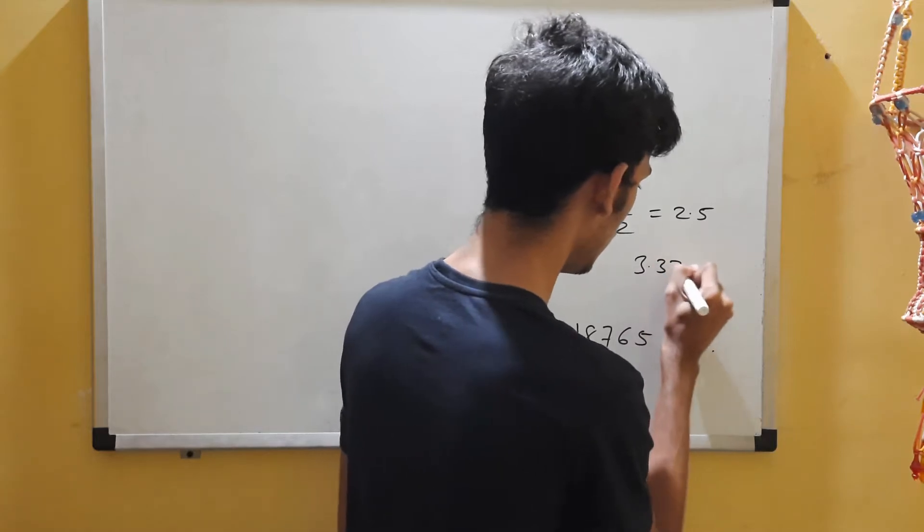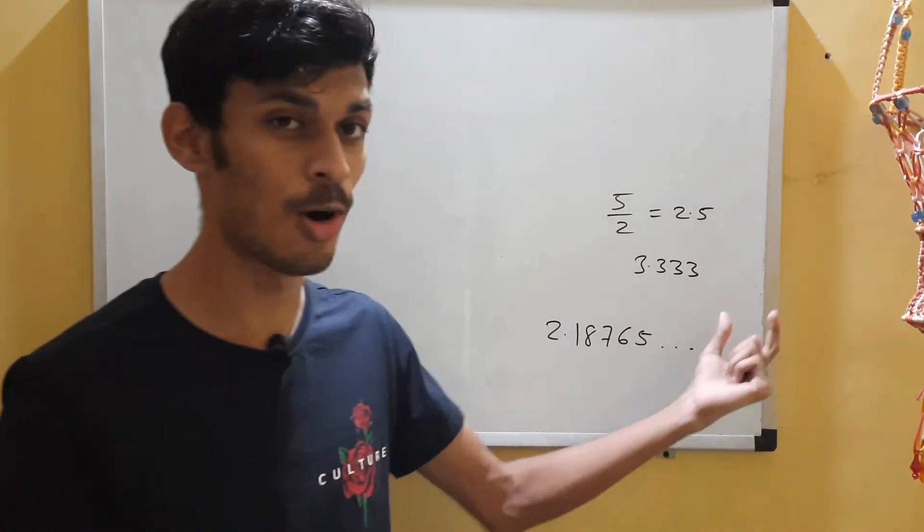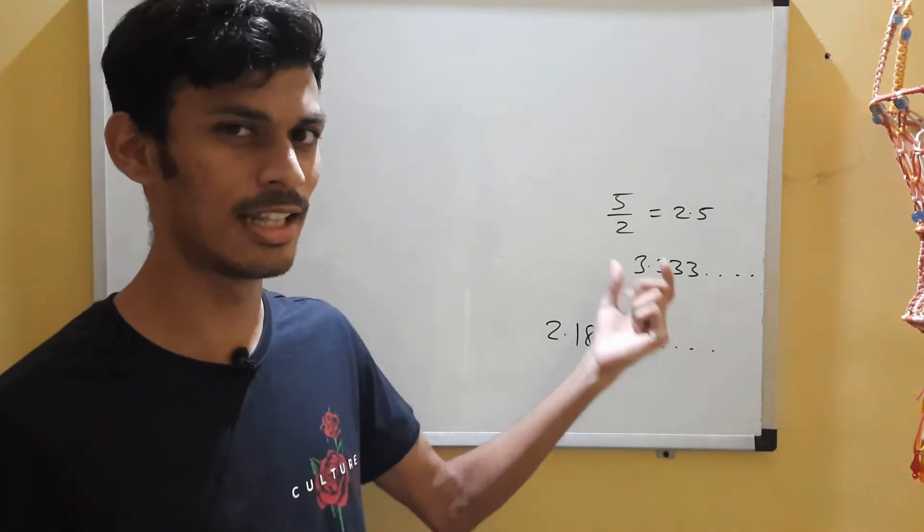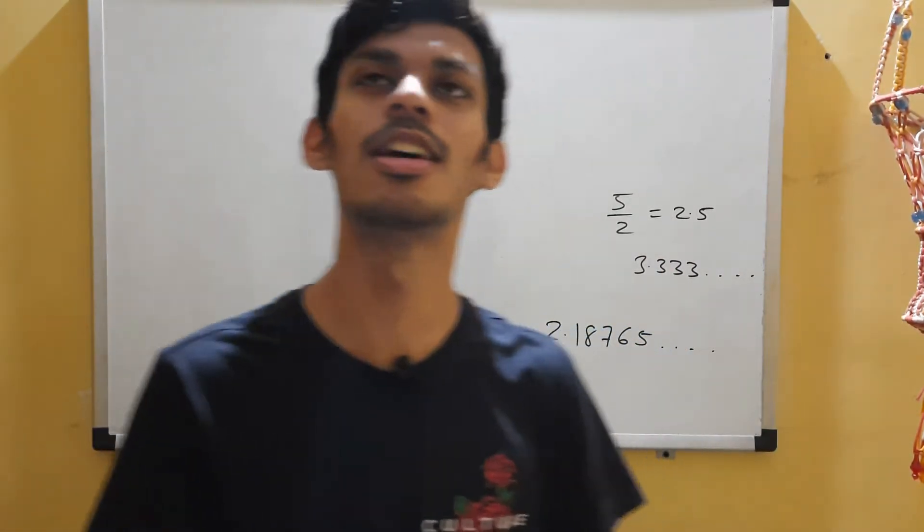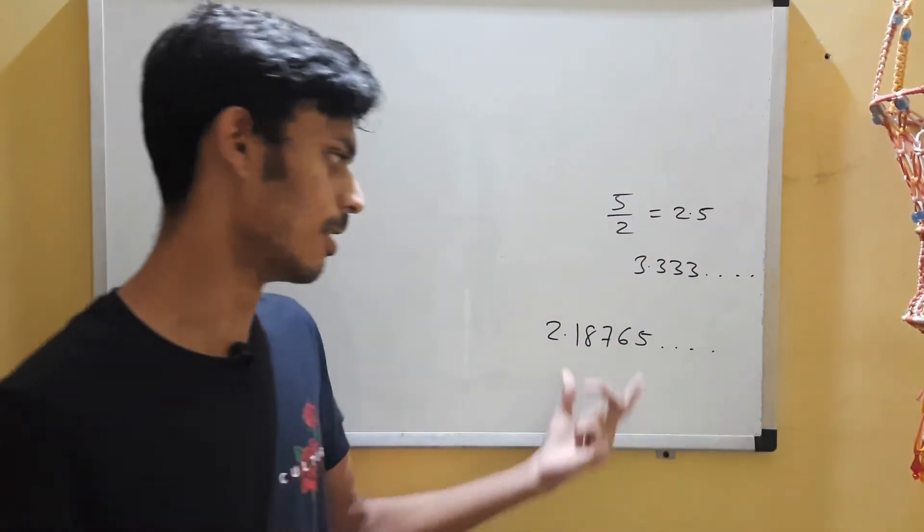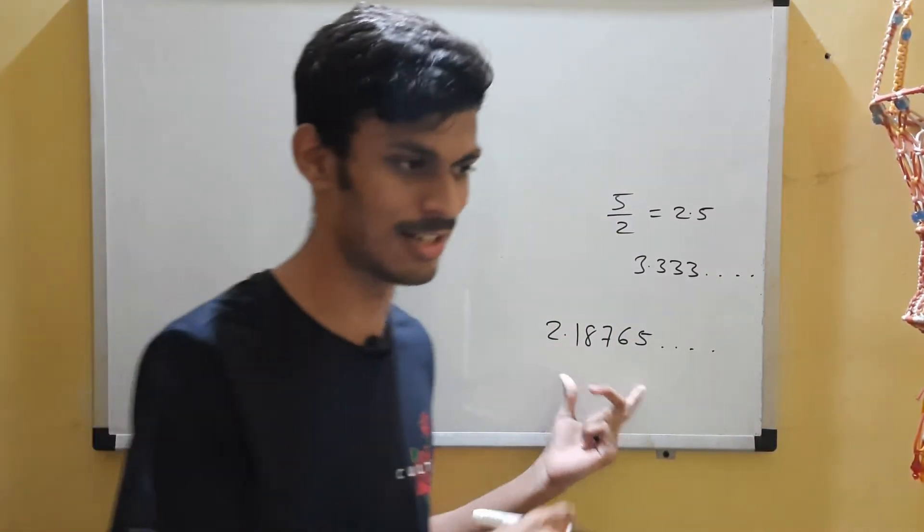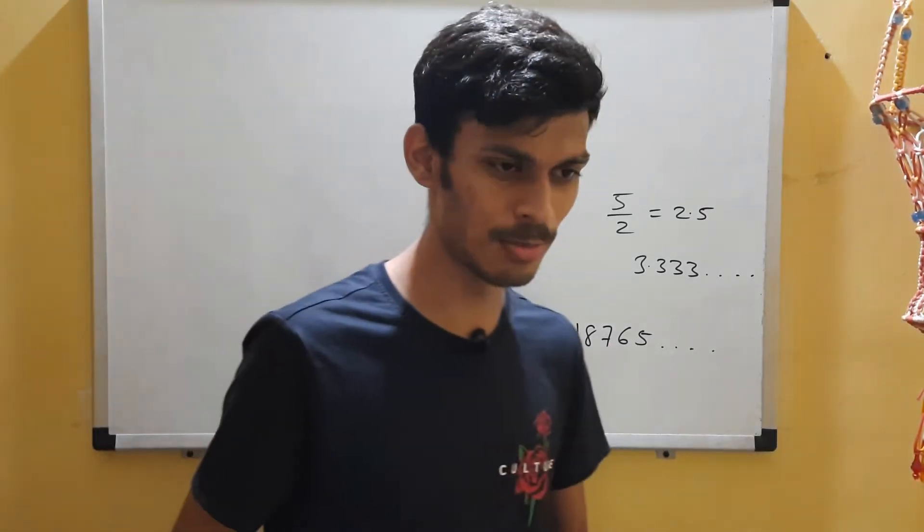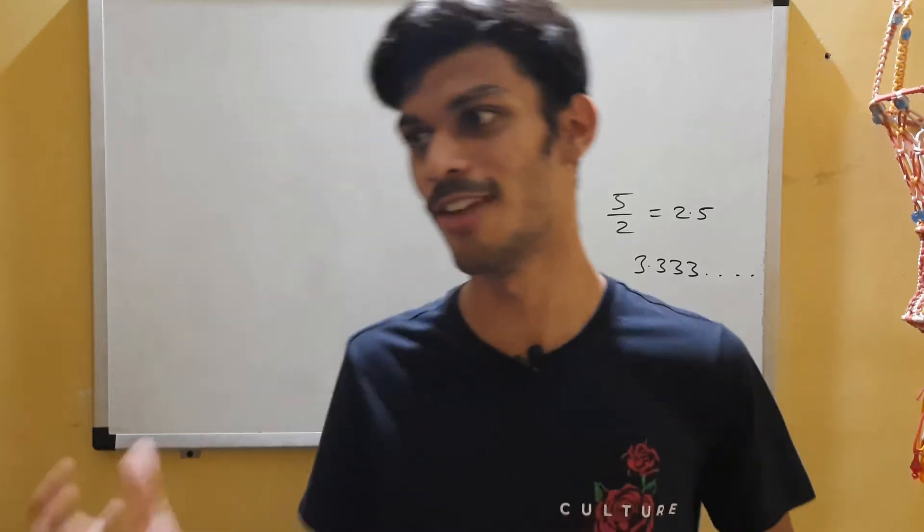Numbers like 3.333 - this goes on, but it has a pattern, right? The 3 goes on recurring, so it's a recurring fraction, which is also rational. So pi is somewhat of this kind - irrational.